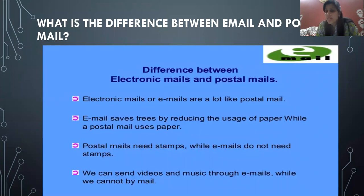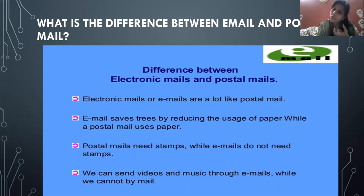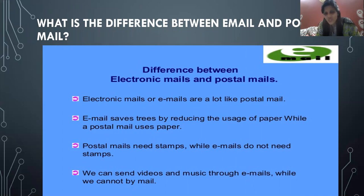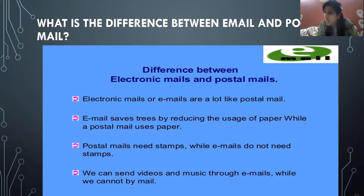What is the difference between email and postal mail? Postal mail is what you write on paper and post in a post box, and the person receives it after three or four days. Electronic mails or emails are a lot like postal mail — they follow the same pattern of writing with a minute difference. Email saves trees by reducing the usage of paper while postal mail uses paper. Postal mail needs stamps while emails do not. Email will go in a fraction of seconds, whereas postal mail takes a very long time.